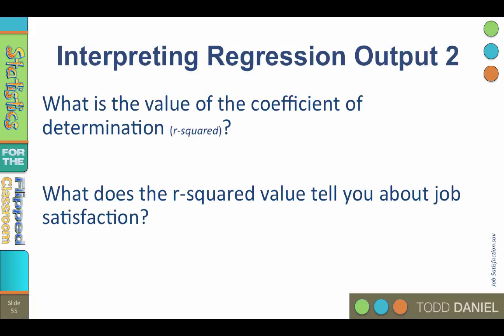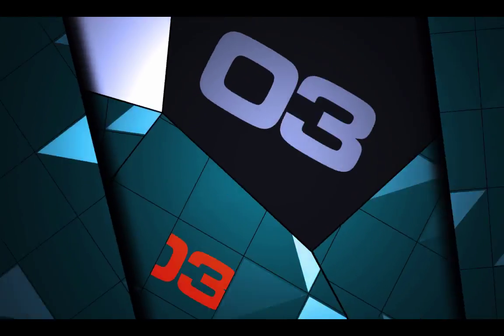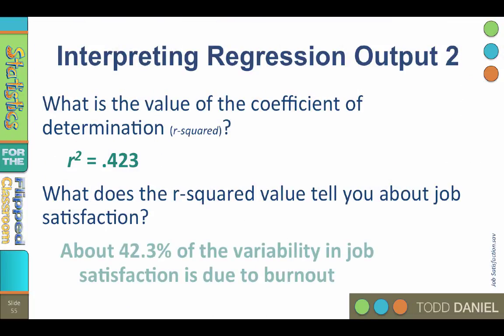What is the value of the coefficient of determination, the r squared? r squared equals 0.423. Here we should use the r squared, not the adjusted r squared. The r squared tells you that 42.3% of the variability in job satisfaction is due to burnout.